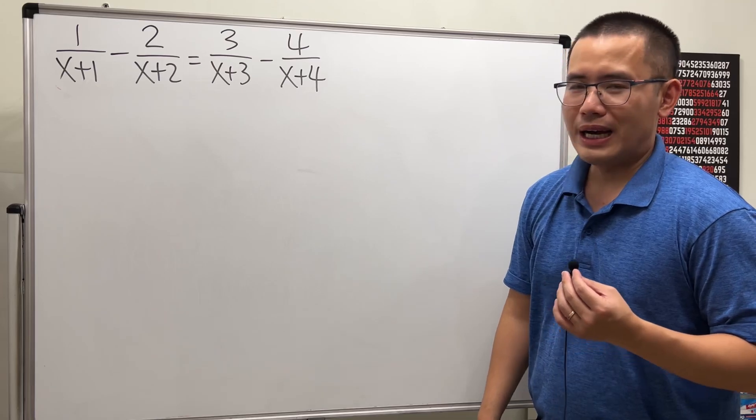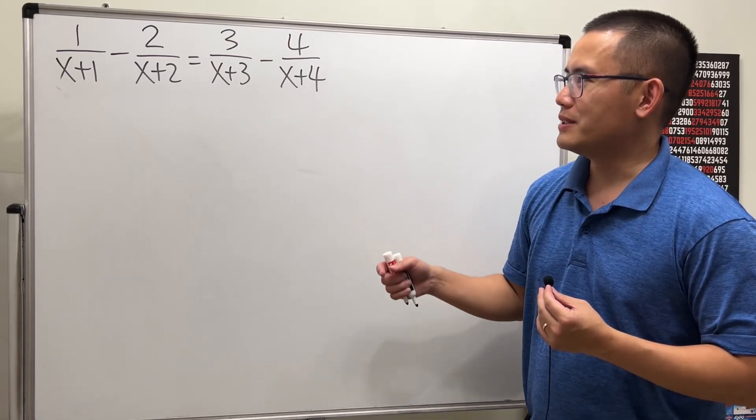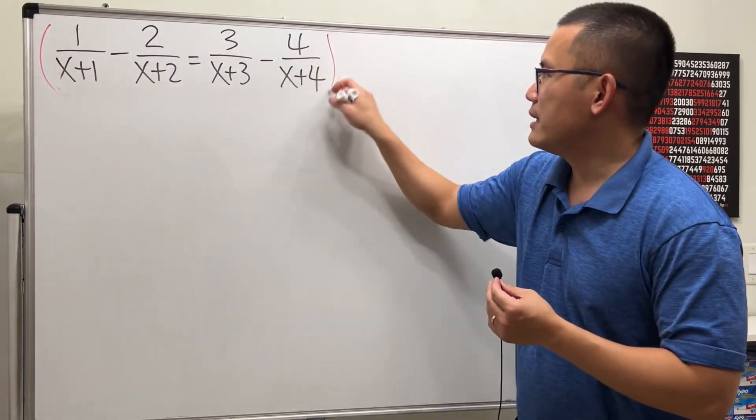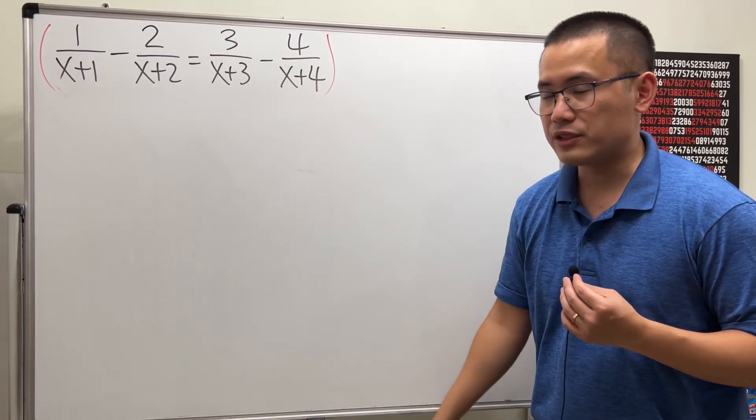But I will tell you, I don't know if this is an easy way to do it. The way that I will do it is just the standard way, which is I will multiply everybody by its lowest common denominator so I can get rid of the fractions.